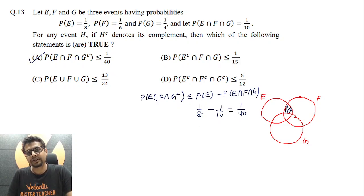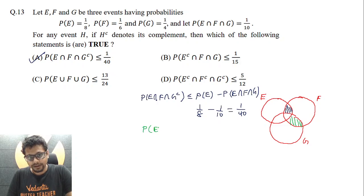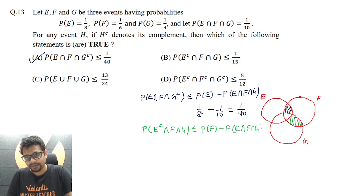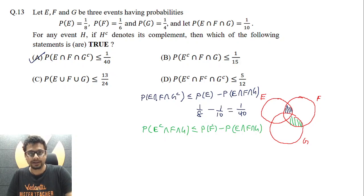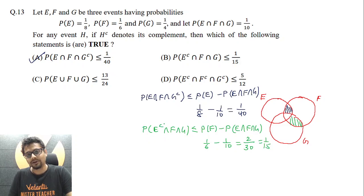Similarly, for probability of E-complement intersection F intersection G: F intersection G is essentially this region, and intersecting with E-complement gives this part. I can say probability of E-complement intersection F intersection G is less than or equal to probability of F minus probability of E intersection F intersection G. Since probability of F is less than probability of G, this gives a stricter constraint: 1/6 minus 1/10 equals 5/30 minus 3/30, which is 2/30, or 1/15. So probability of E-complement intersection F intersection G is less than or equal to 1/15. So option B is also correct.